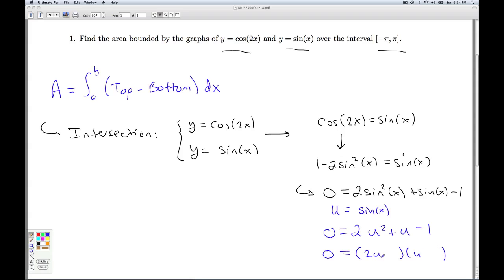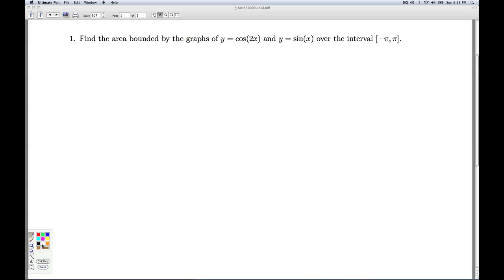That factors nicely for us as 2u minus 1, u plus 1. This gives u equals a half, or u equals negative 1. But u is equal to the sine of x, so we get the sine of x is equal to 1 half, or the sine of x is equal to negative 1.